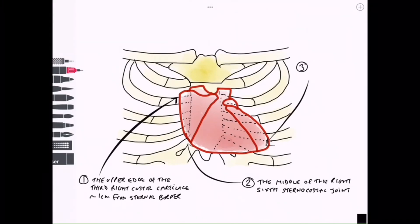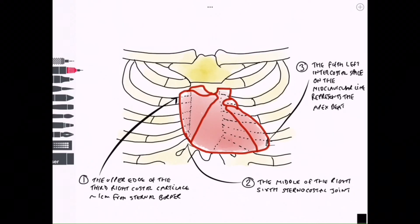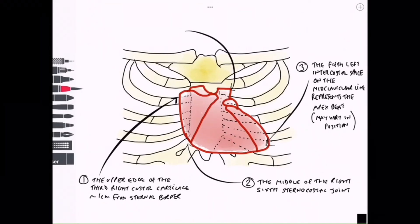Position three here is the fifth left intercostal space about nine centimeters from the midline which represents the midclavicular line. On male subjects this line runs slightly medial to the position of the nipple, and finding that location in the fifth intercostal space and the midclavicular line finds the apex beat.